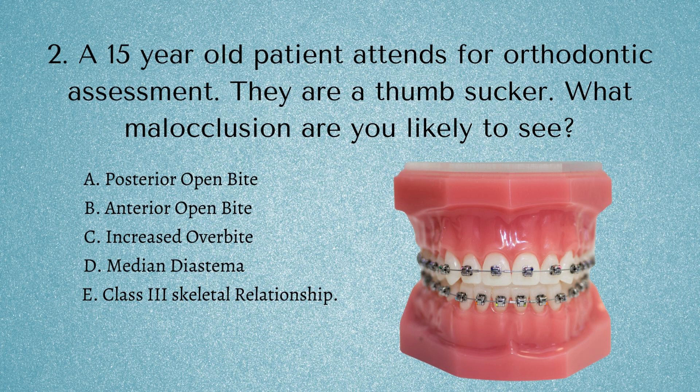This takes a little bit of thinking. Obviously if the thumb is going to be in the front of the mouth, it's going to prevent the front teeth from coming together correctly. If they're still 15 years old and still sucking their thumb, then definitely there's going to be an anterior open bite. There might be some other features as well — they could have a class 3 skeletal relationship, or a median diastema — but those are likely not a direct result of the thumb-sucking habit. B is the correct answer.